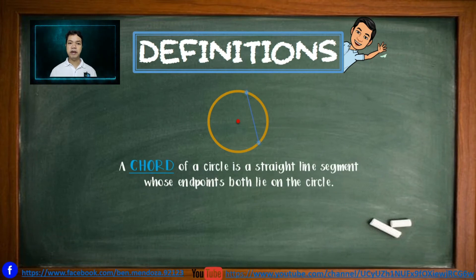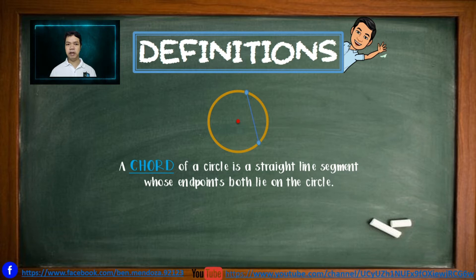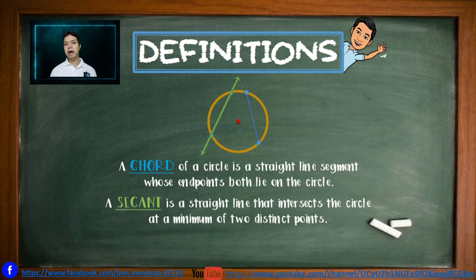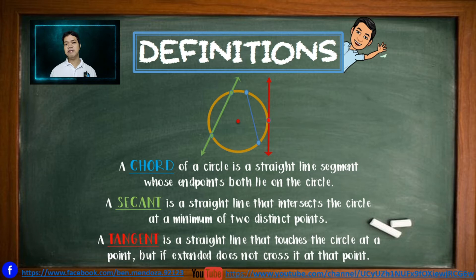A chord of a circle is any line segment whose endpoints lie on the circle. Can we consider the diameter a chord? Definitely — because the diameter is the longest chord of a circle. A secant is any straight line that intersects the circle at a minimum of two distinct points, while a tangent is any straight line that touches the circle at exactly one point.